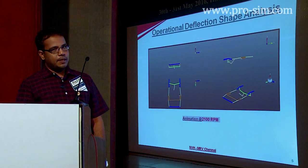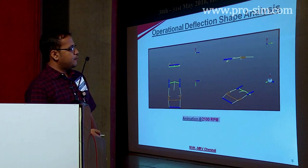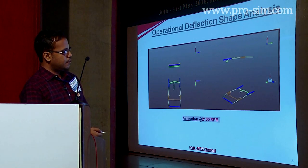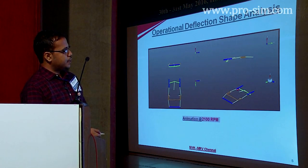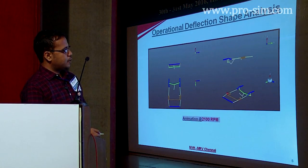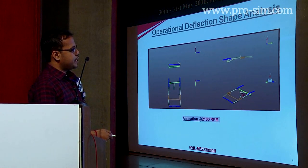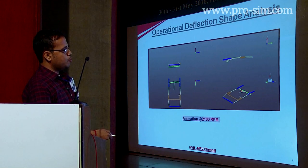This is the operational deflection shape analysis which we have done on the entire vehicle. We have measured on the engine side, on the body, on the rear axle, and on the pinion also. The green color is the axle and this is the differential pinion. This is the suspension connection point on the body, and this is the powertrain mounting connection point on the body. We observe there is an excessive motion happening in the differential pinion — a pitching motion — due to which the rear axle is showing more movement.